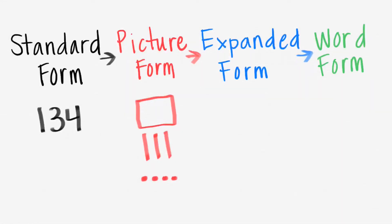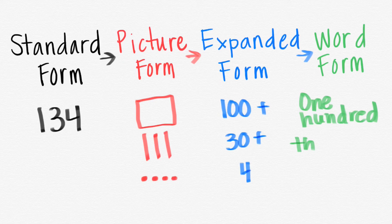Now let's do expanded form and expand it out. At the top we have 100, then we have three tens, which makes 30, and four ones, which makes four. Now let's write it out. One hundred, thirty, four.